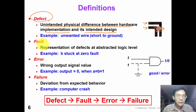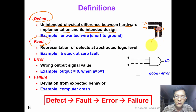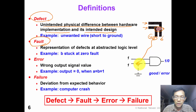The second definition is a fault. A fault is a representation of a defect at the abstracted logic level. Continuing from our previous example, for this AND gate, suppose that we have a defect which shorts input B to ground. We can model this defect at the abstracted logic level. This is what we call a fault model.